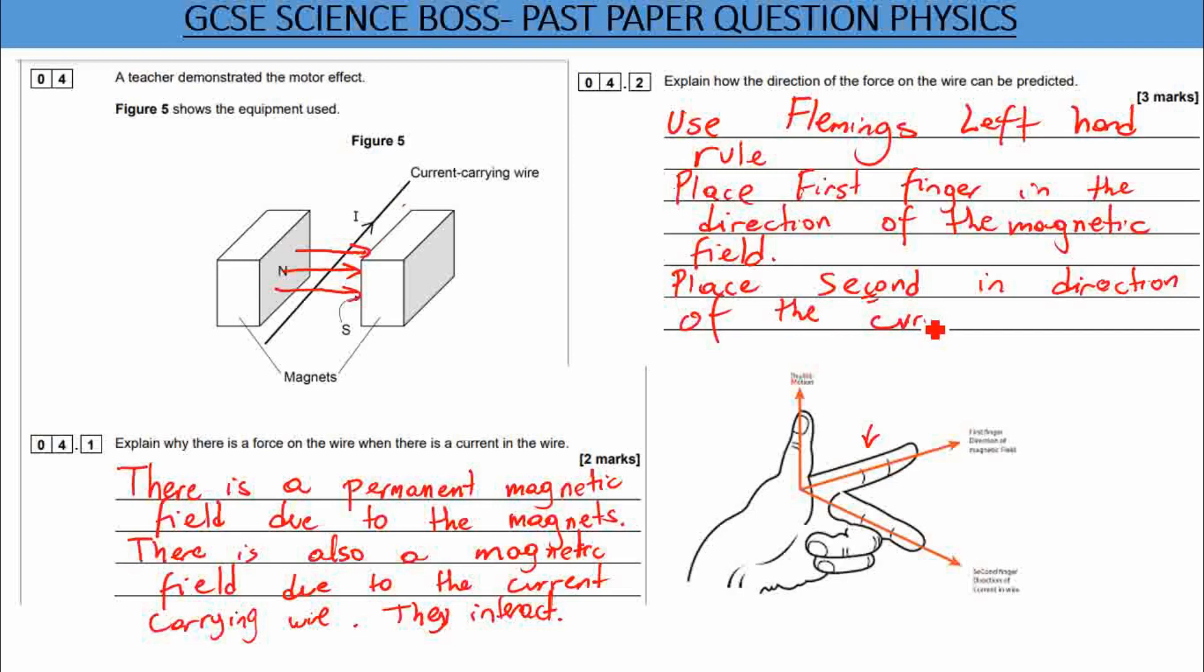In direction of the current. Of the current, and look, they've identified where that finger should be pointing. So you should be using your left hand. Your second finger should be pointing into the screen, right? And if you align your fingers correctly, you should now note that your thumb is going downwards.